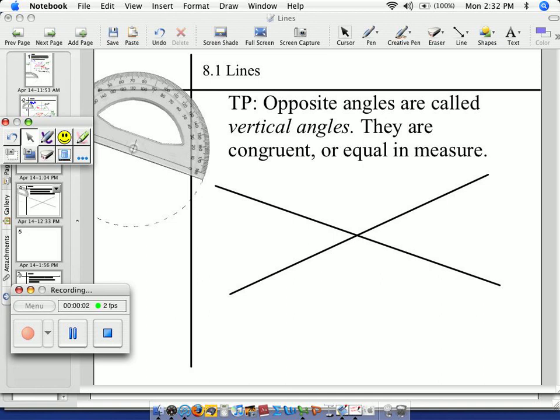All right, so our teaching point here now, the second part, is that opposite angles are called vertical angles. They are congruent. Look at the use of the comma. Right after congruent, I'm going to explain what that means. Congruent means equal in measure.